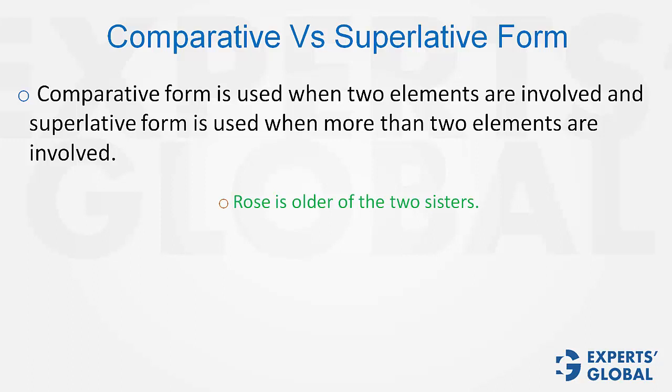Examples. 'Rose is older of the two sisters.' There are two sisters and, therefore, comparative form — 'older' — is the correct usage.